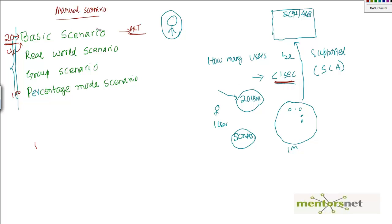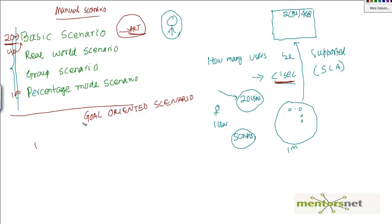However, if my goal is a response time of less than one second, the real question is: how many users can I run while still meeting that goal? To answer this, LoadRunner gives you an option called a Goal-Oriented Scenario. In a goal-oriented scenario, you define what your goal is — for example, average response time less than two seconds, or a specific number of transactions per second.